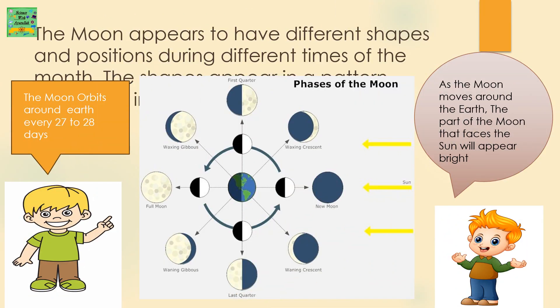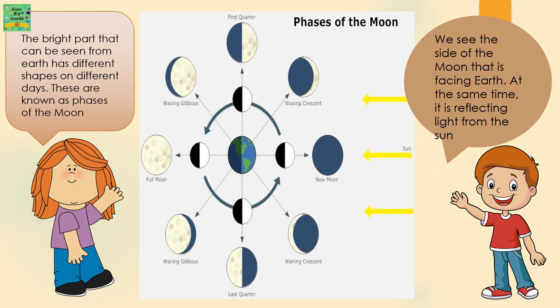The Moon appears to have different shapes and positions during different times of the month. The shapes appear in a pattern repeating in a cycle. The Moon orbits around the Earth every 27-28 days. As the Moon moves around the Earth, the part of the Moon that faces the Sun will appear bright. The bright part that can be seen has different shapes on different days. These are known as phases of the Moon.